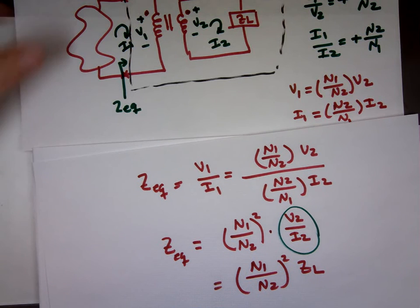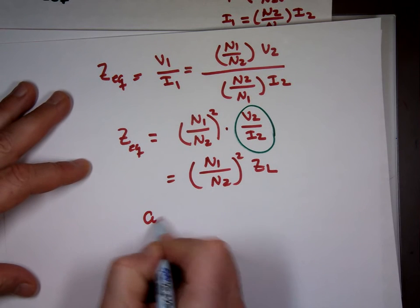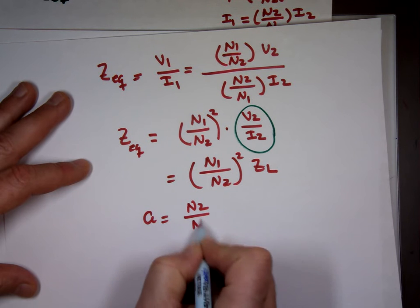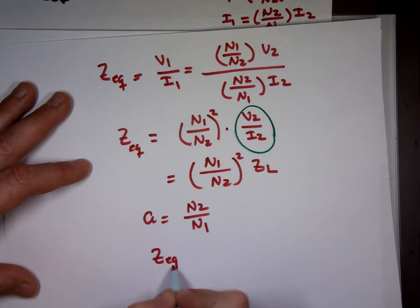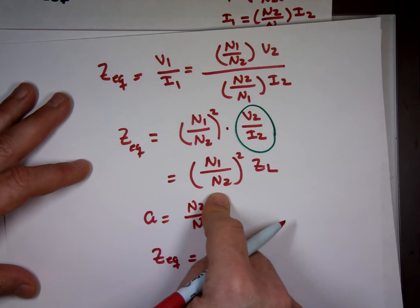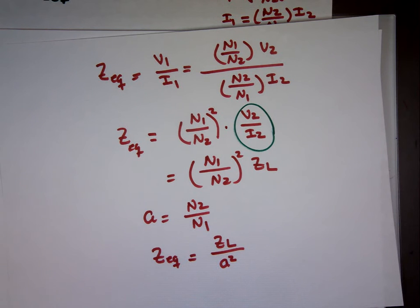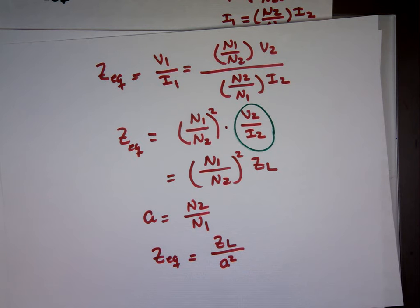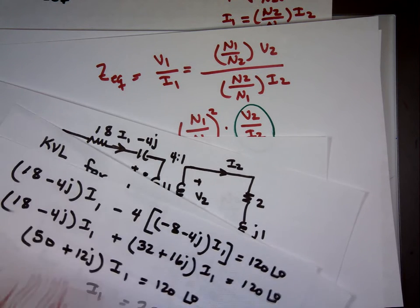Since we defined a = n2/n1, the equivalent impedance is Z_eq = ZL/a². So you can take the secondary circuit and replace it with ZL/a² as seen from the primary side. Let's verify this using the previous example.